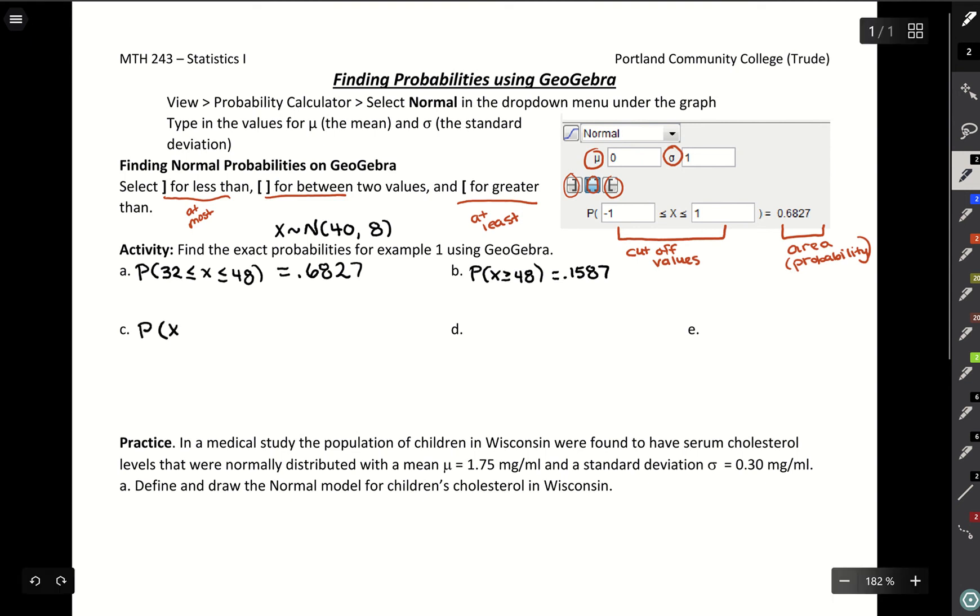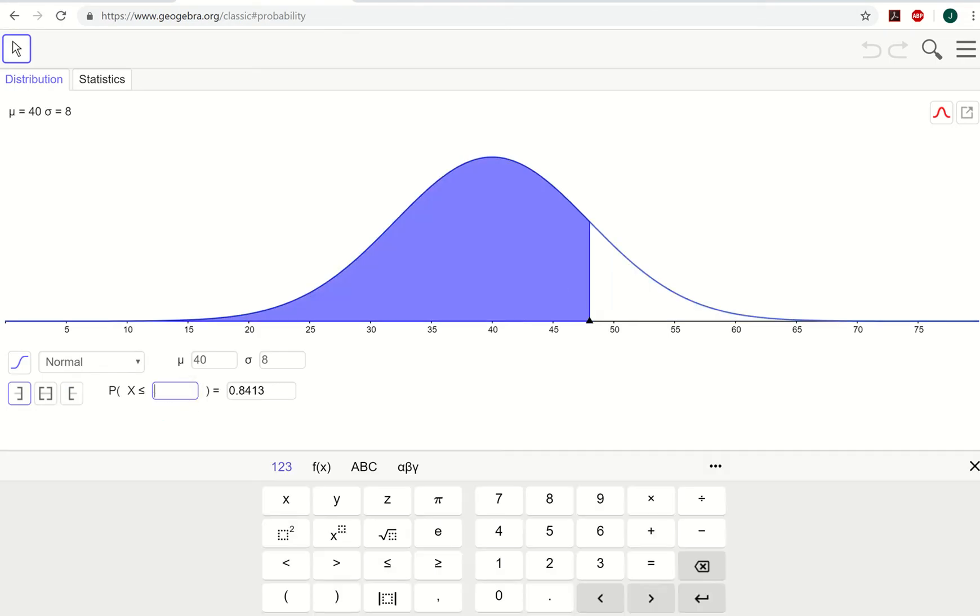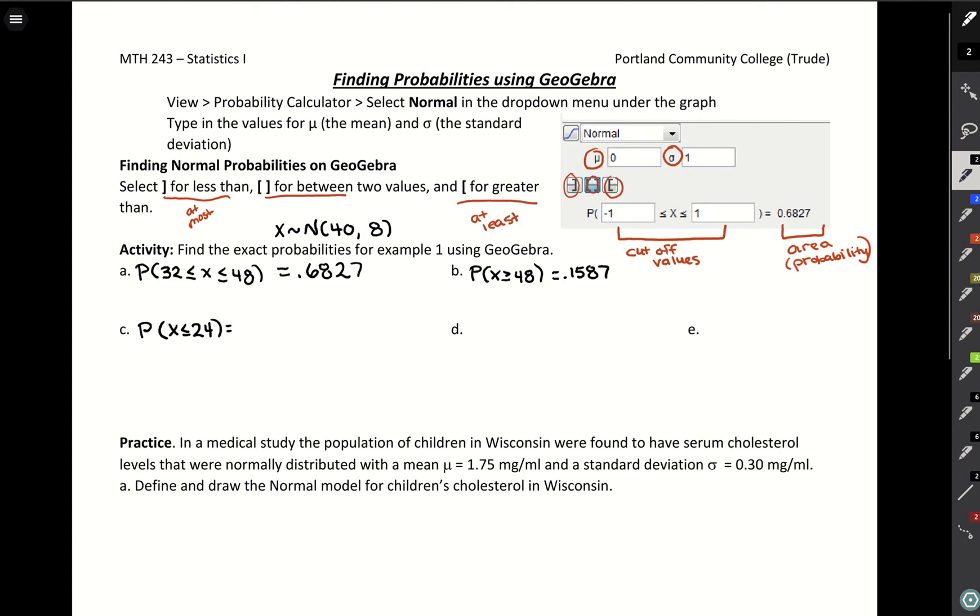C looked at the probability of being less than or equal to 24. With this one, we want to go with an area to the left and have that start out at 24. Then just hit enter, 0.0228, which is close to that 2.5% that we talked about.